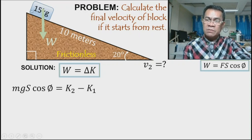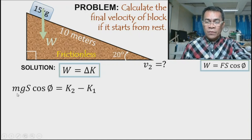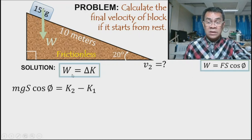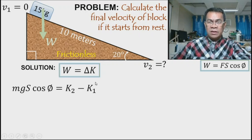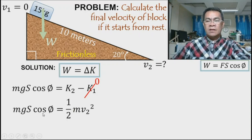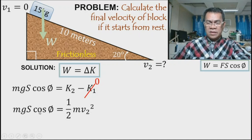The work done by gravity equals F·d·cosθ, which is mg times displacement (10 meters) times cosine of the angle θ. Since the initial velocity is zero, the initial kinetic energy is zero. Replacing K₂ with ½mv₂², we have mg·d·cosθ = ½mv₂².